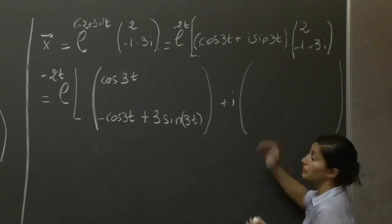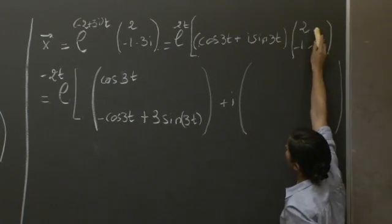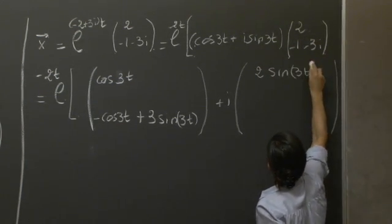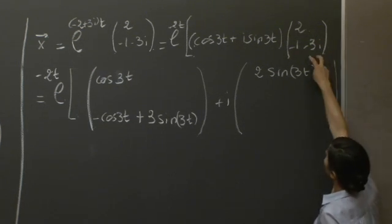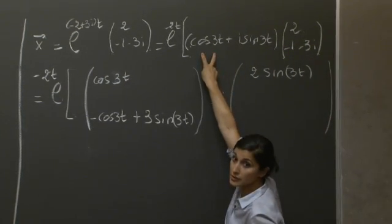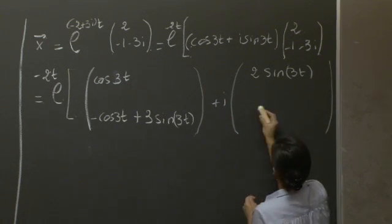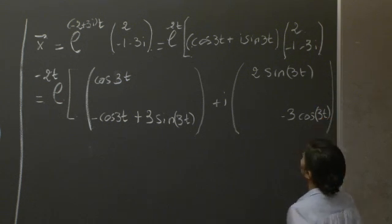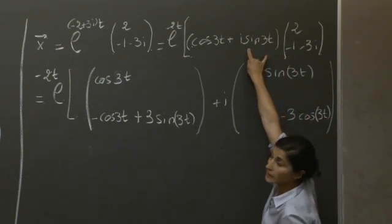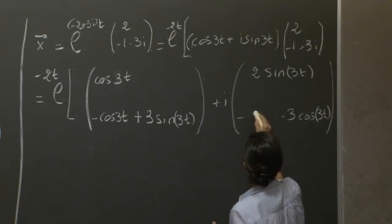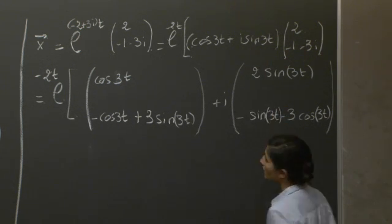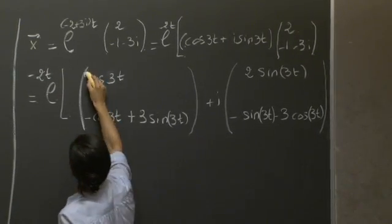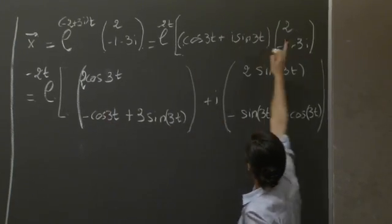Now let's focus on the imaginary part. What do we have? We have an i sine 3t multiplying a 2. And we have a minus 3i here multiplying cosine 3t. So we're going to have a minus 3 cosine 3t. And finally, this minus 1 multiplying this sine 3t. So now we split our solution into a real part and an imaginary part.